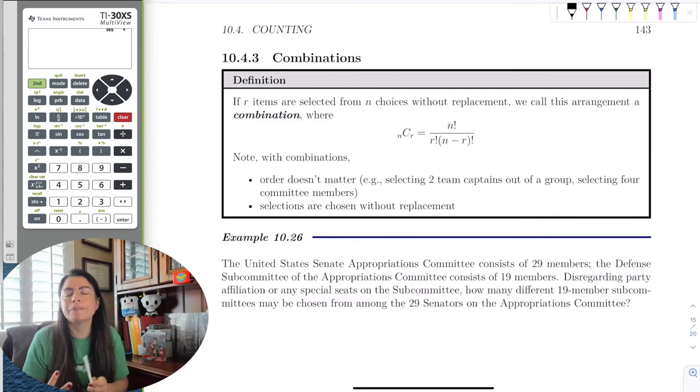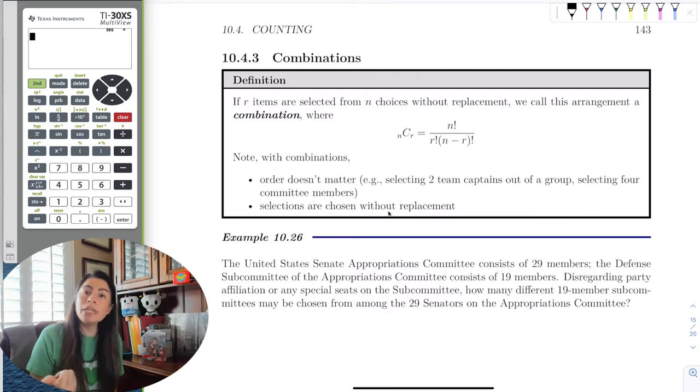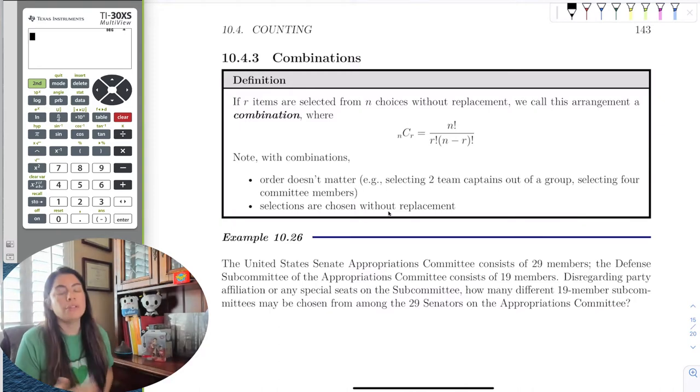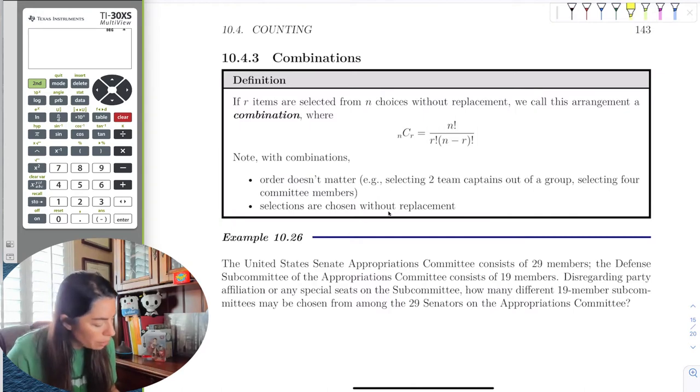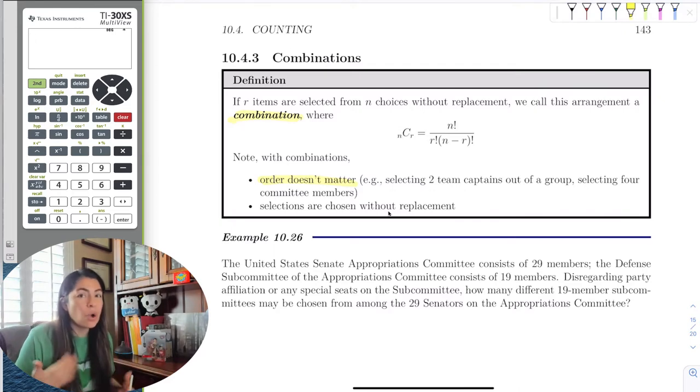So committees, order doesn't matter. Teams usually doesn't matter unless it's captain. And then all we do is note that order doesn't matter and it's always without replacement. So combinations and permutations are both non-repeating, no repetition. And then all you do is see whether or not order matters or it doesn't. If the order matters, then you use permutation. And if it doesn't matter, you use combination. So the key word here with combination is that order doesn't matter, but it's still no repetition, always without replacement.